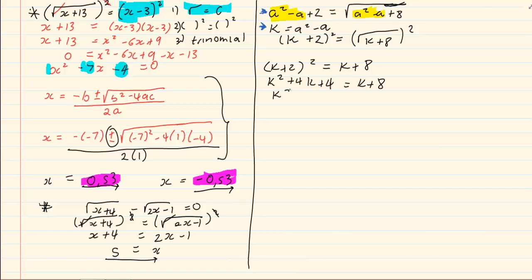Then we make it a trinomial so we got k squared plus 3k minus 4 is equal to 0. In other words we bring all the k's on one side and make it equal to 0. This would give us k plus 4 times k minus 1. Using our linear rules we got k is equal to minus 4, k is equal to 1.